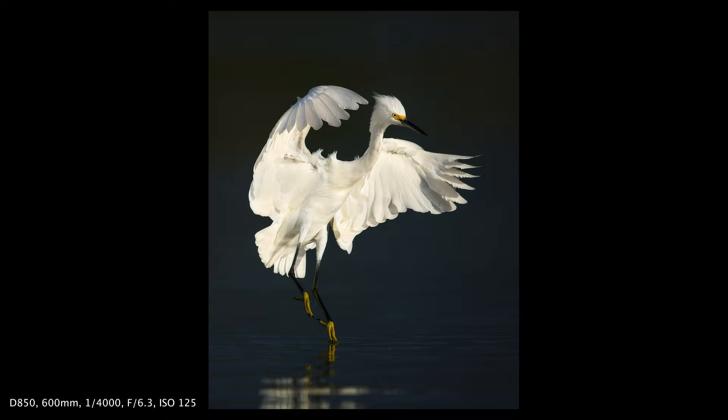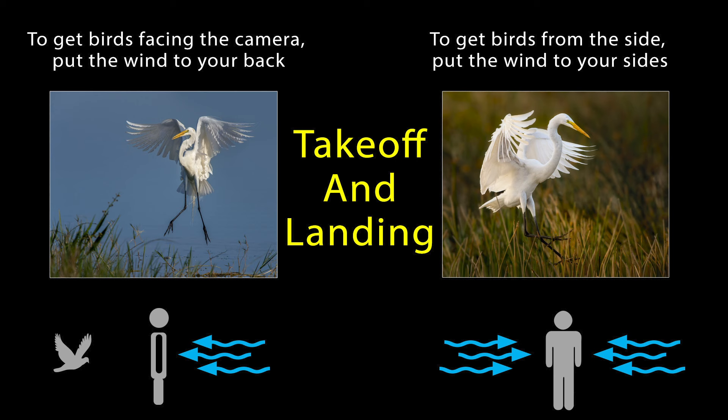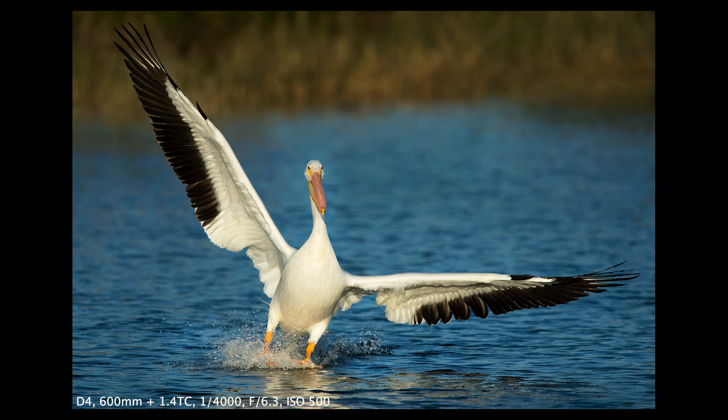Number six: wind considerations. Here's the golden rule with wind — birds take off and land into the wind. If you want shots with them facing the camera as they come and go, keep your back to the wind. If you want side shots, keep the wind to either side of you, preferably with it cornering your back just a little bit. The worst situation is having that wind blowing right in your face — you're going to get a lot of birds with their backs to you. If the wind is at my back or at my sides, I'm a pretty happy camper.